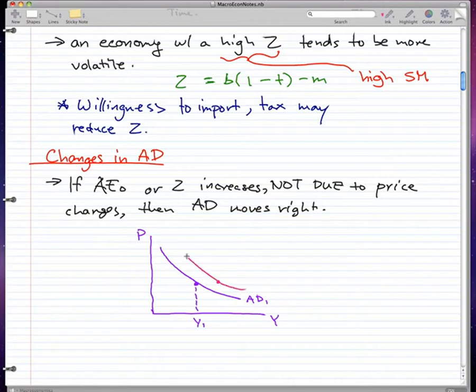Then aggregate demand shifts right. Our spending increases not due to price changes, so aggregate demand moves right. This would be our new aggregate demand curve and new income for a while. But I want you to notice something here.